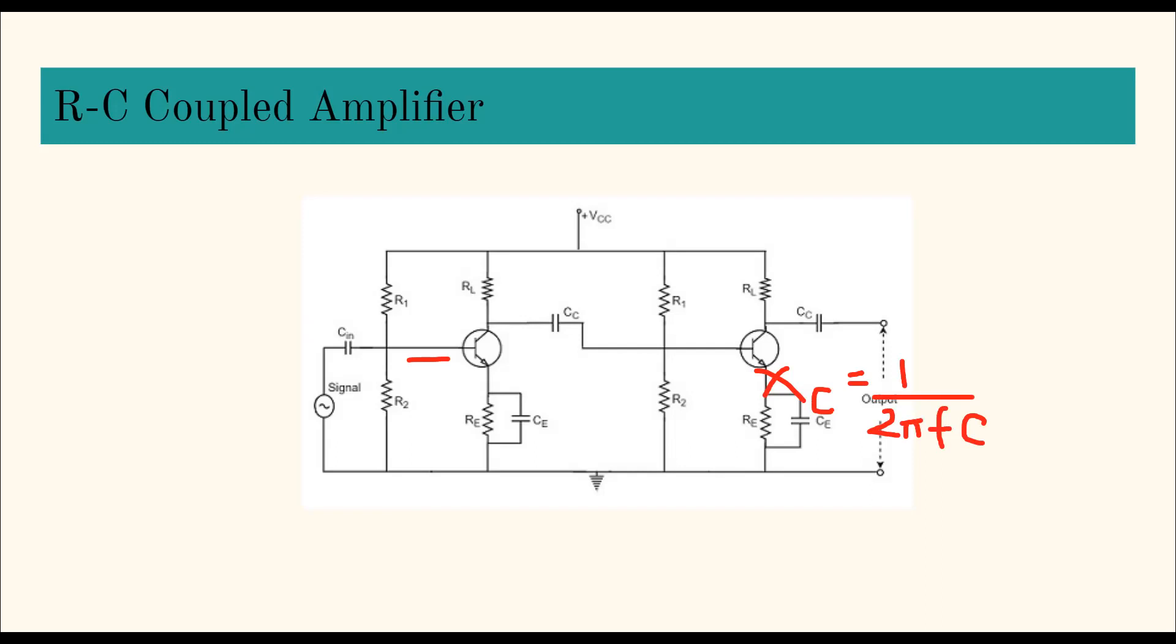As frequency increases, the reactance is going to decrease. That means at very low frequencies, as frequency is low, reactance is high, resistance is high. The current will not be allowed to pass, that is why the gain is less over here. This is divided into three regions: low frequency region, mid frequency region, and high frequency region. These are the cutoff frequencies fL and fU.